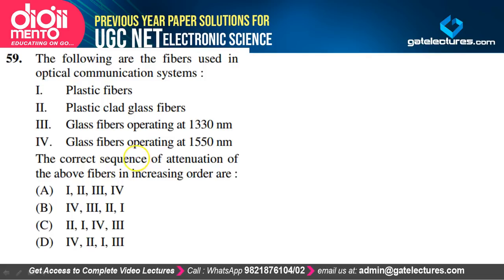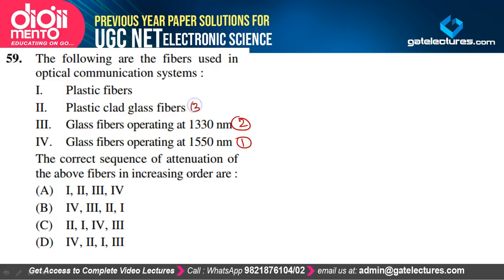Optical fibers in increasing order of attenuation: glass fibers at 1550 nm (minimum attenuation), glass fibers at 1310 nm, plastic-clad glass fibers, plastic fibers (maximum attenuation). Option B satisfies our explanation.